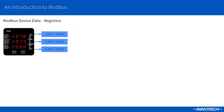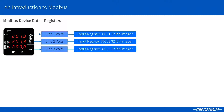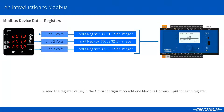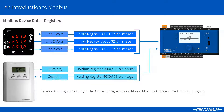In this example I have a power meter and we need to read back the voltage for the three phases connected. Each value is held in an input register which is a 32-bit integer. You would need to add one Modbus comms input block in the Omni configuration to read each register. As another example, this Modbus sensor has a humidity value and a set point that are held in holding registers which are 16-bit in length. Omni can write to the set point by using a Modbus comms output block set to write to holding register 400006.